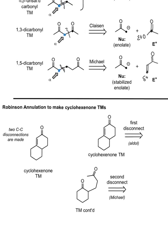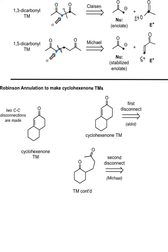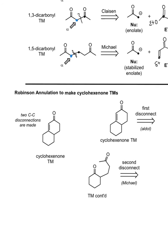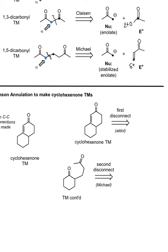Let's take a look at another pattern that uses combinations of these same reactions — that's when we have a cyclohexenone as our target molecule. We see the six-membered ring with the alpha-beta-unsaturated carbonyl. To do this, we're going to end up doing two disconnections. The first disconnection is an aldol disconnection. We focus on the alpha carbon, and since we have an alpha-beta-unsaturated carbonyl, that comes from an aldol reaction — giving us a carbonyl as our electrophile and an enolate as our nucleophile. That aldol reaction forms the cyclohexenone ring.